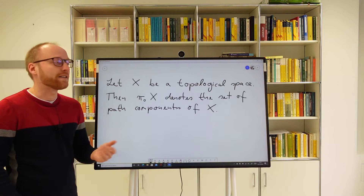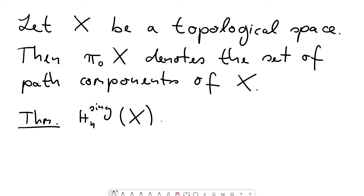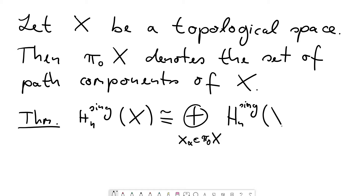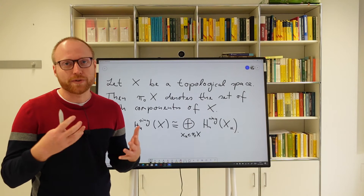Then we have the following theorem: the n-th singular homology of our space X actually decomposes as the direct sum over all path components, call them X_α, of the homology of just that particular path component. We should comment that in the case the topological space has only finitely many path components, then this is already a consequence of the first four Eilenberg-Steenrod axioms.